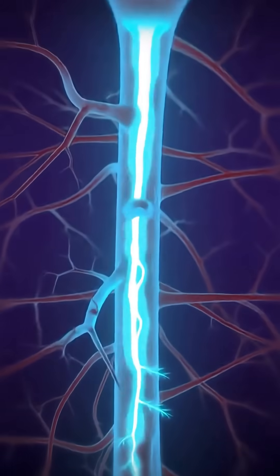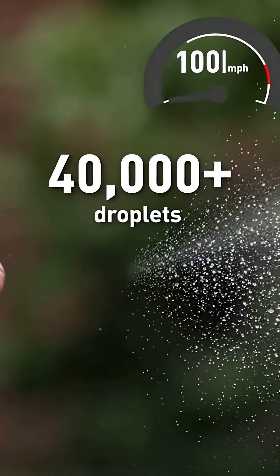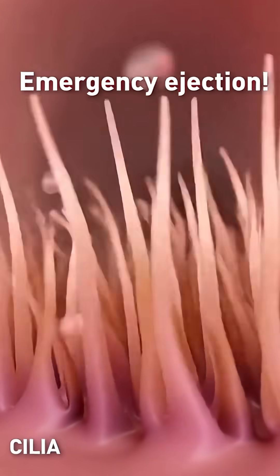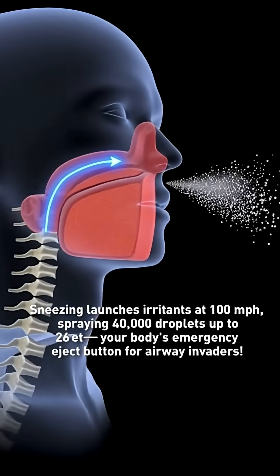Irritant detected. Nerve signal races to the brain. The reflex is engaged. Big breath in. Emergency ejection! Achoo! Your sneeze blasts out at 100 miles per hour, spraying more than 40,000 droplets that can travel up to 26 feet. Clear the runway!